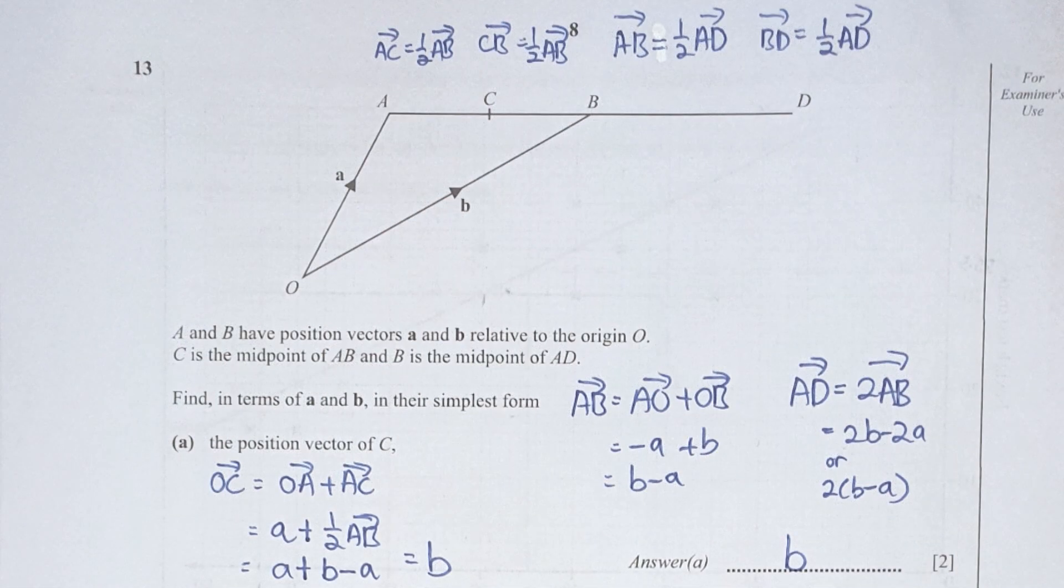Question 13 here. I listed down all the details. AC equals to half of AB. CB equals another half of AB. AB equals to half of AD, and BD equals to half of AD. So the position vector of C, we will be using OC. OC equals to OA plus AC, which translates into a plus 1 over 2 of AB. AB here is actually AO plus OB, which is b minus a. After the conversion, your OC's value should be b only.